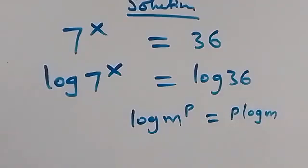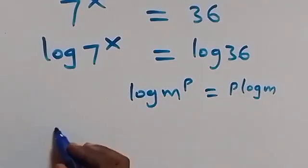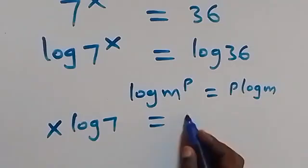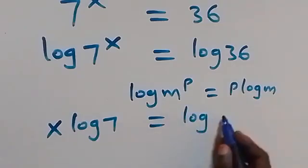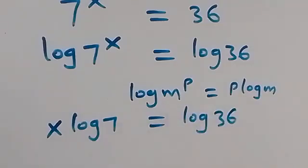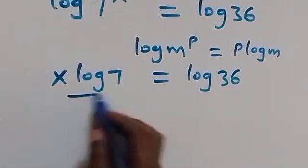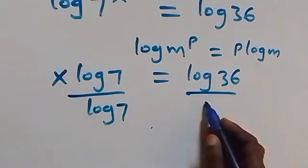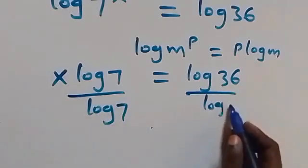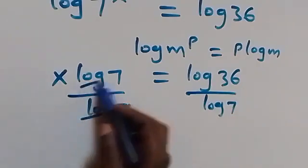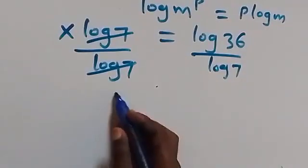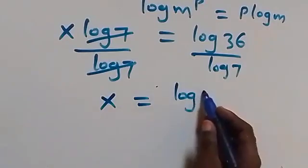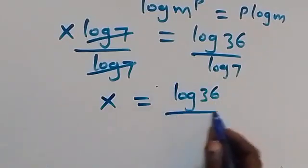The p here is x. So this becomes x log 7 equals to log 36. Next, we divide both sides by log 7. Here log 7 cancels with each other, and what we have left is x equals to log 36 over log 7.